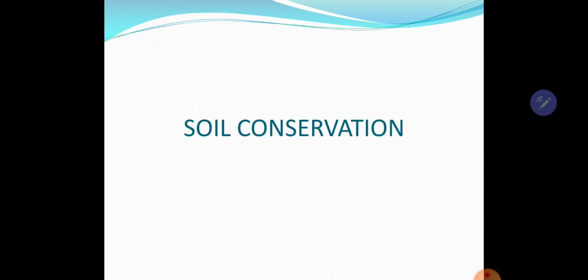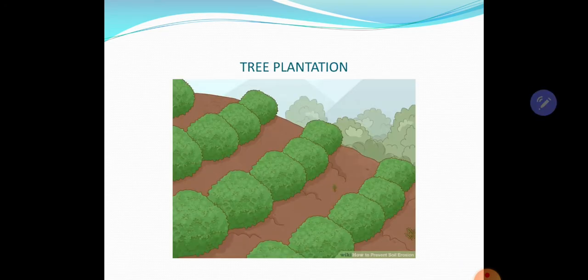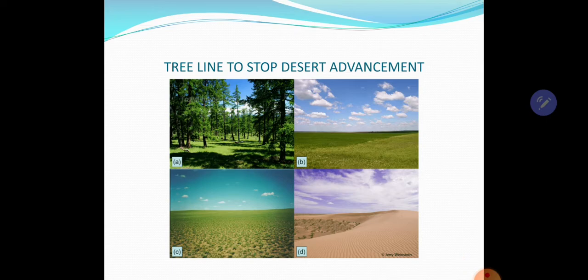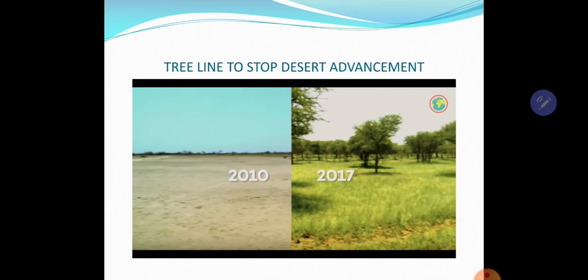Next, conservation of the soil — tree plantation. We have to have tree plantation. Then, a tree line to stop desert advancement — not only in hilly regions. You can see over here it was a desert, then they had plantation, and now it is green. We can turn any desert into green. One image shows 2010 when it was desert and now it is a green area. A tree line should be erected to stop the desert from advancing, and the soil will turn into fertile soil.